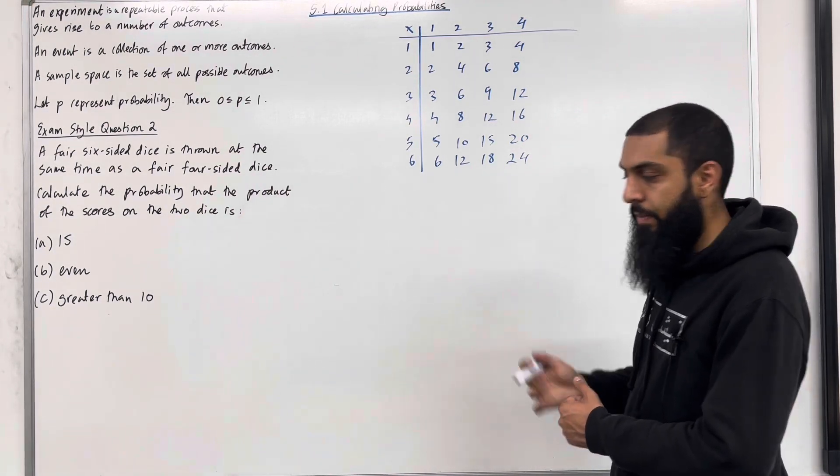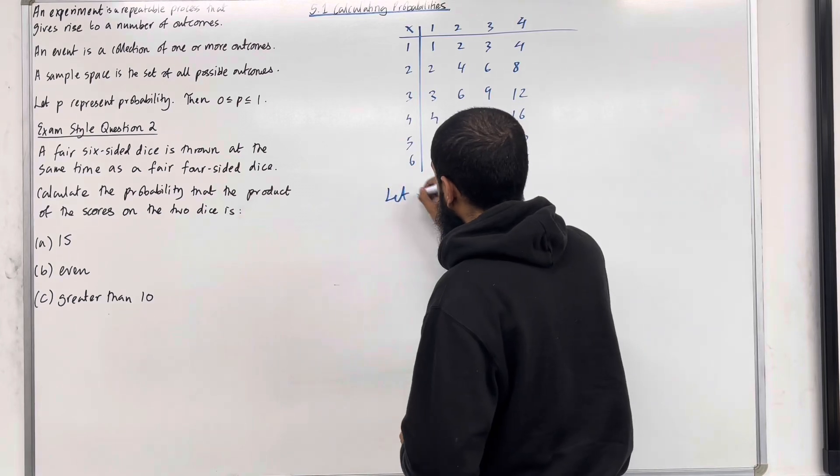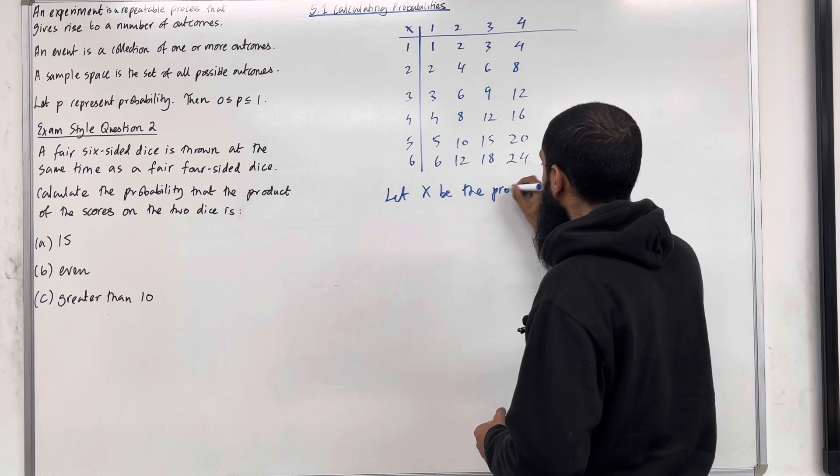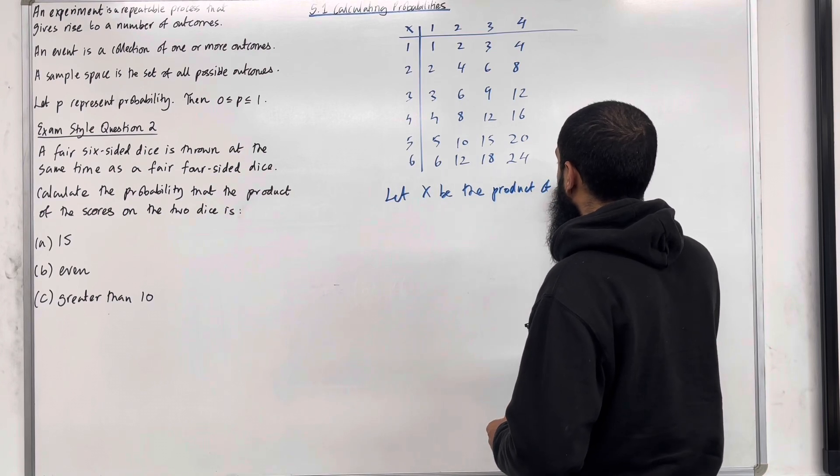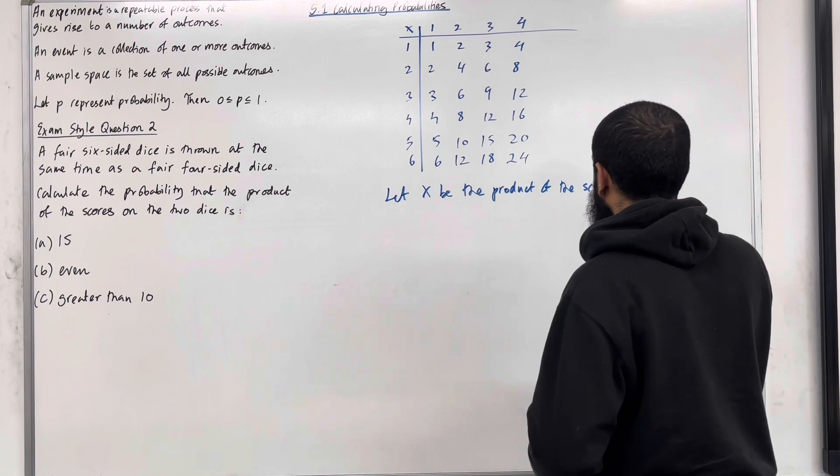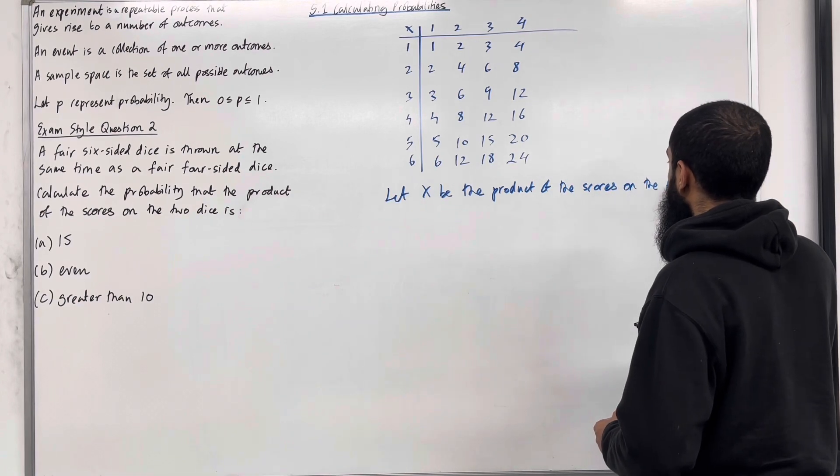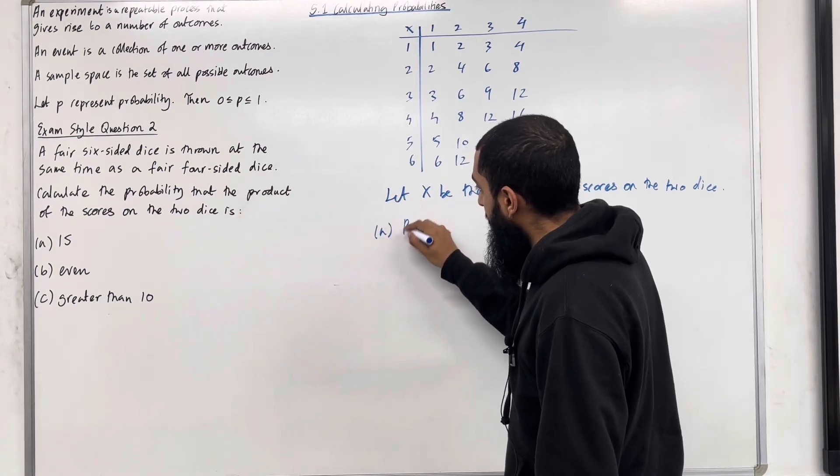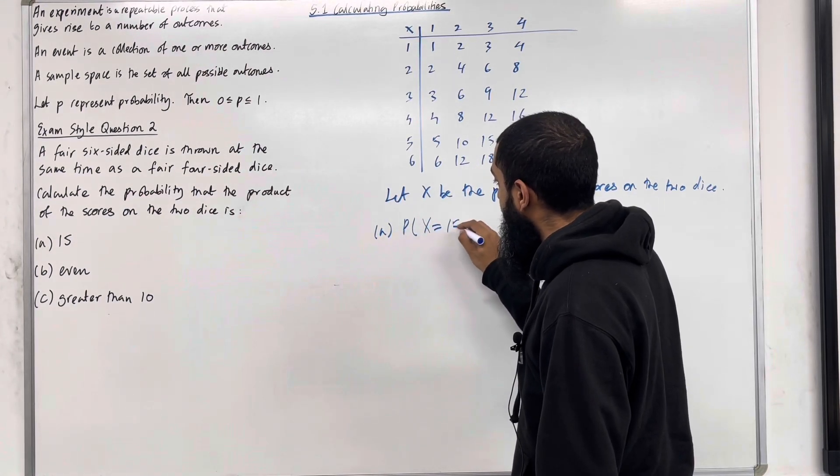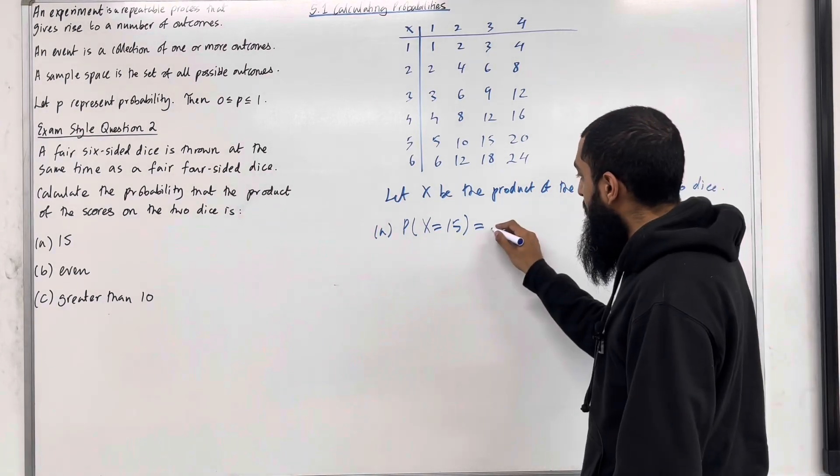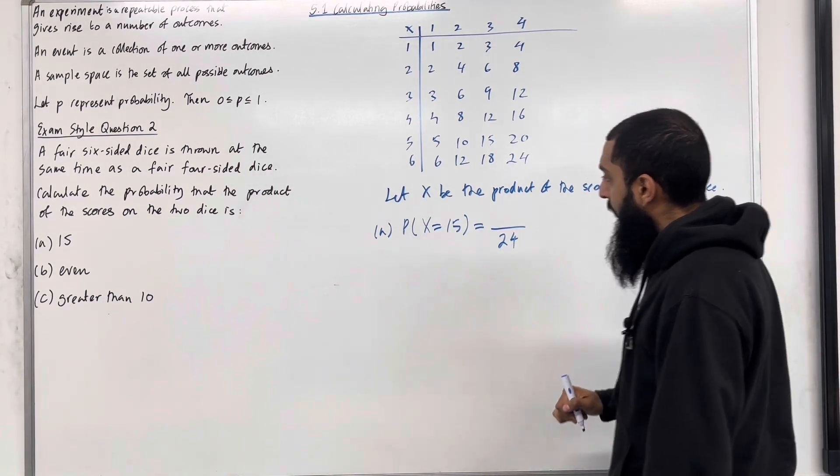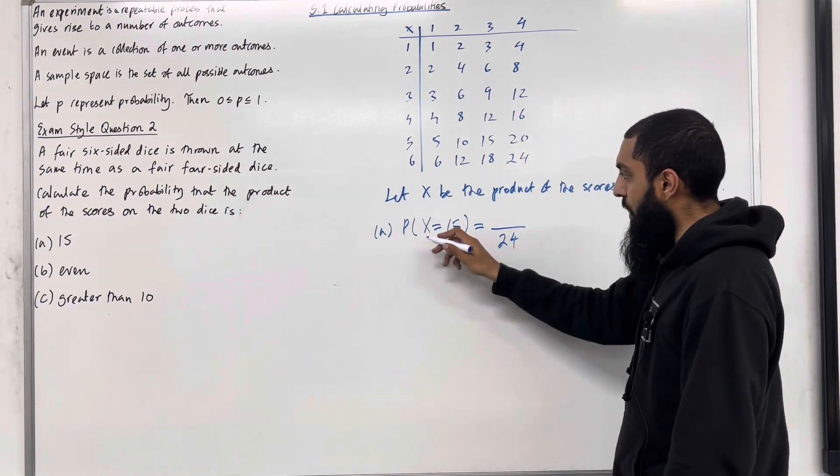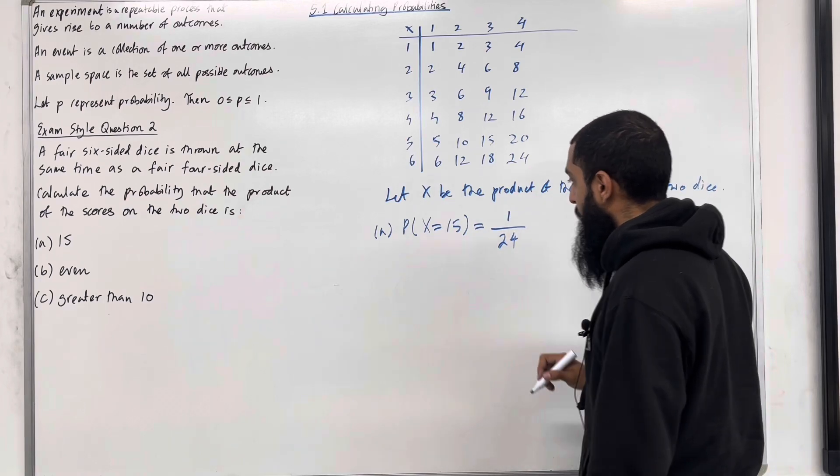Let's give the solution a structure. Let X be the product of the scores on the two dice. In part A, we want to work out probability X is equal to 15. So we know that the probability is out of 24. And the product we want is 15. How many 15s are there? There's only 1. So the probability that X is equal to 15 is just 1 out of 24.